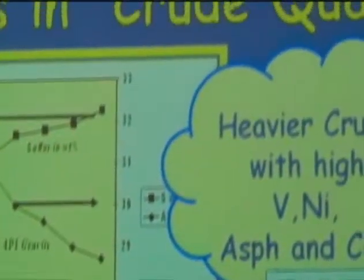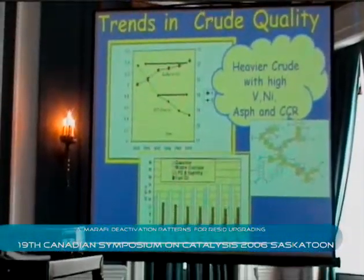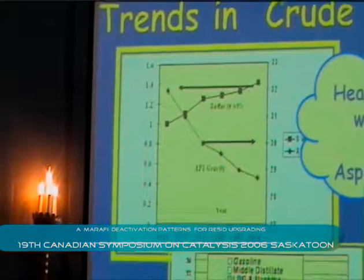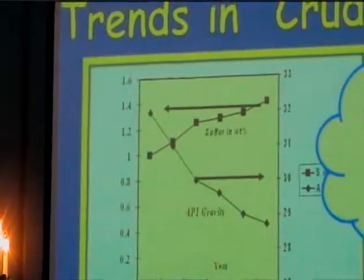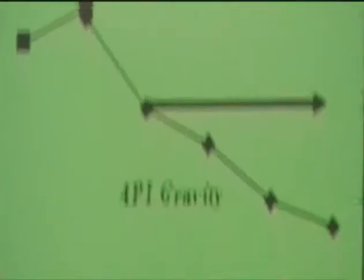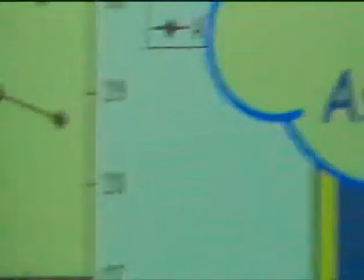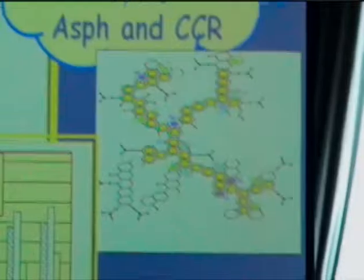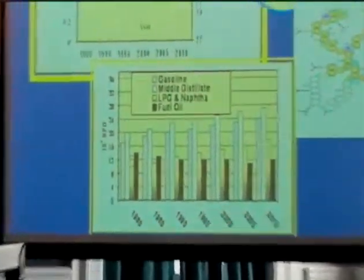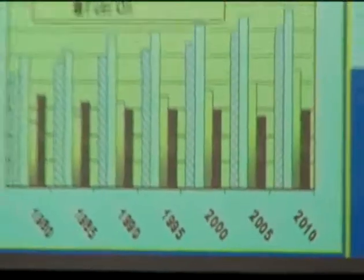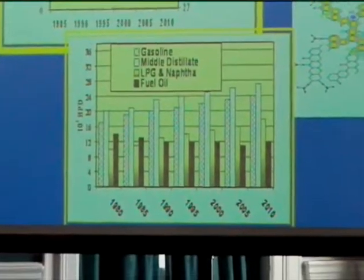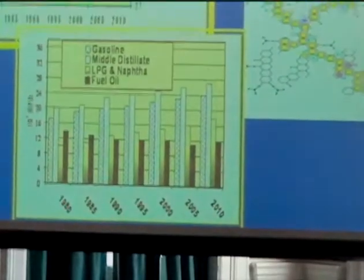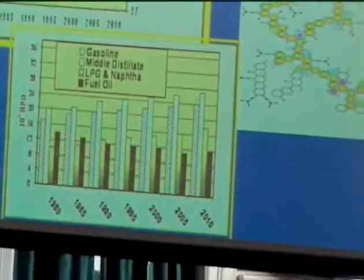This figure to the left shows the trend in the quality of crude. As we can see, crude is getting heavier with higher sulfur and lower API. The demand for middle distillate is increasing, so upgrading and high conversion refinery is needed. We also have to keep in mind that heavier crude implies high metal content like vanadium and nickel, asphaltene, and carbon.